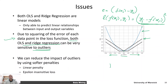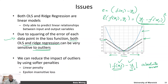Instead of squaring the error, we can use an error function that measures the absolute difference between prediction and true value. Whenever the error is zero, the loss is zero. If the error is 0.5 in either direction, the loss is also 0.5 — this is called absolute error. It reduces the impact of outliers because large mismatches are not penalized as heavily, so it will probably behave better than ordinary least square regression in the presence of outliers.